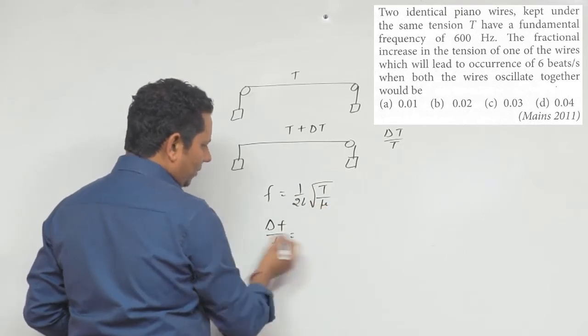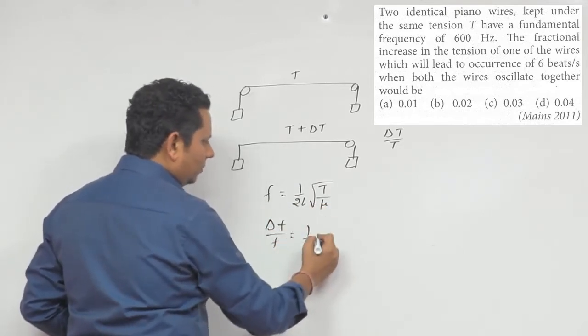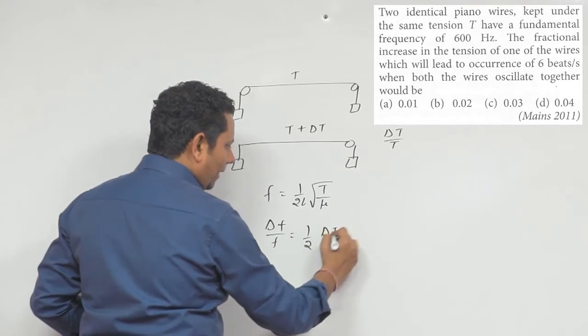This will be equal to one by two times delta T by T.